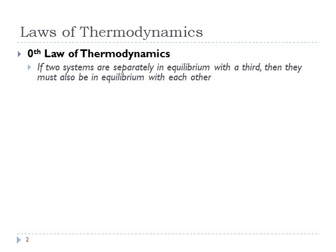There are four main laws of thermodynamics, given the names 0, 1, 2, and 3. The zeroth law is the most basic — it says that if two systems are separately in equilibrium with a third, then they must also be in equilibrium with each other. It's more of a statement of equality: if the temperature of A equals B, and B equals C, then A equals C.